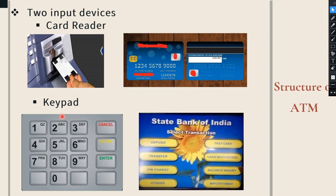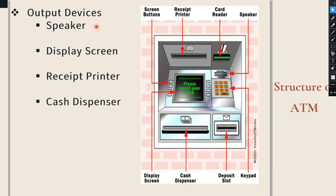So the two input devices are: first, the card reader, and second, the keypad. Now we will see the output devices. There are four output devices: speaker, display screen, receipt printer, and cash dispenser.